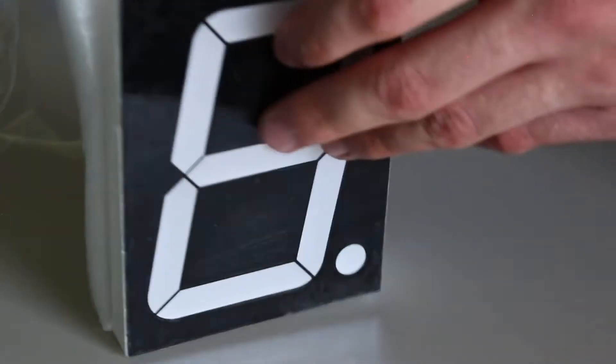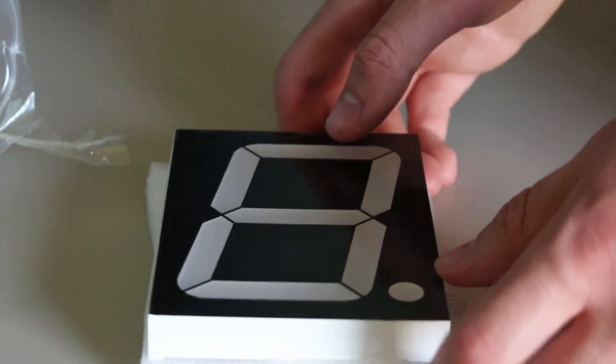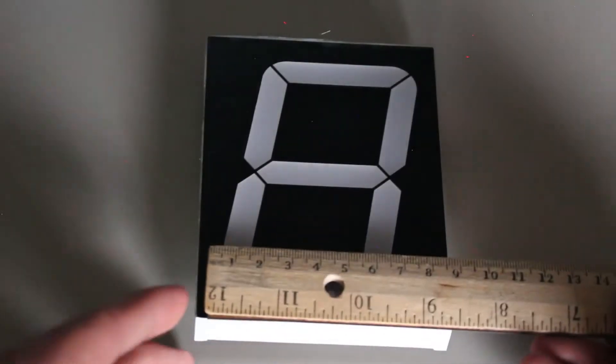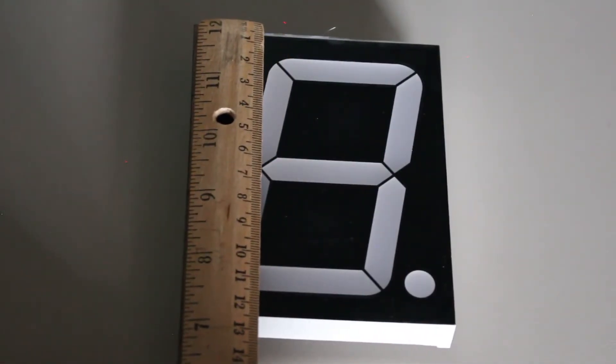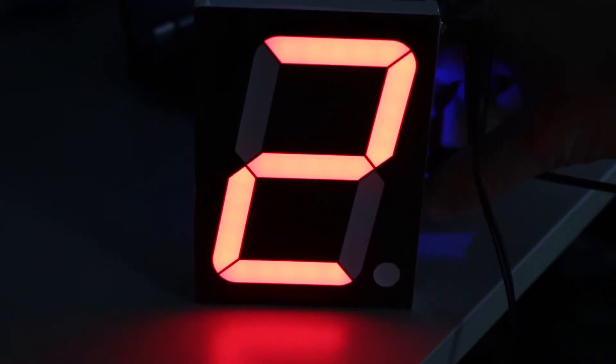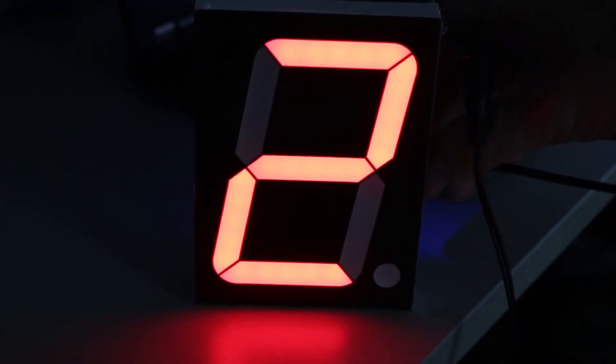I bought these very large 7 segment displays and received them in the mail. After measuring them, I found that they are 9 cm x 12.5 cm. The best use for them, I thought, was to create a subscriber counter that was connected to the internet that I could easily see from anywhere in my room. Let's make one.